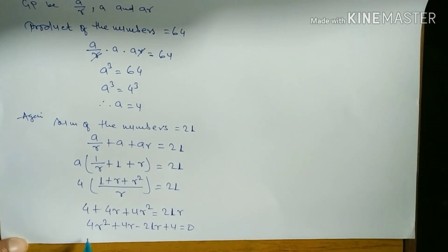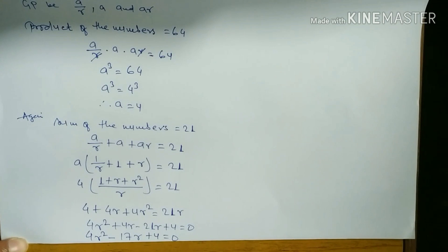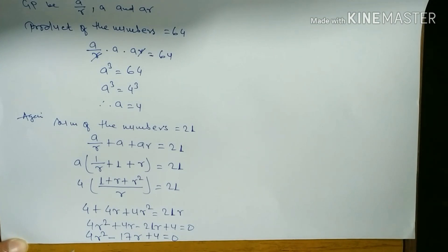Subtracting, we get 4r² - 17r + 4 = 0. So the equation is 4r² - 17r + 4 = 0. Now we have to factorize this.